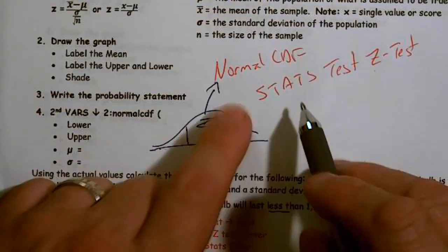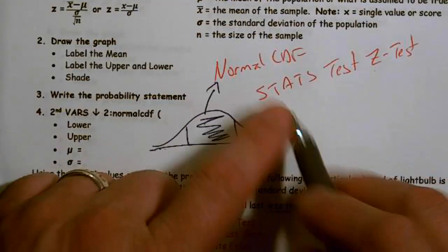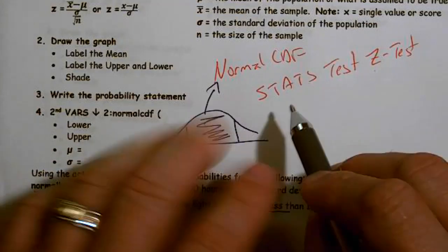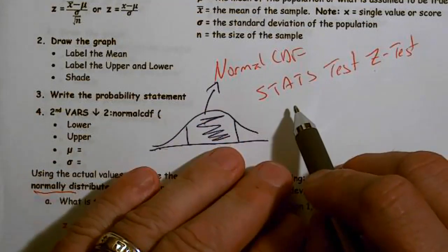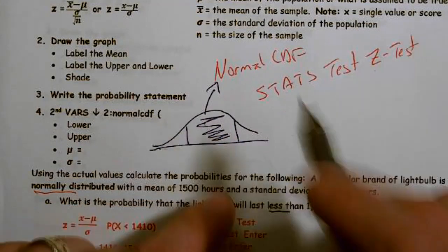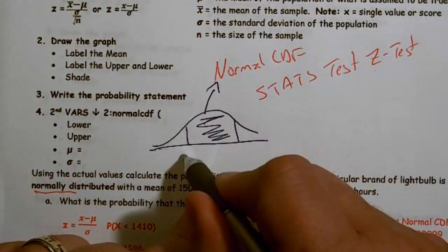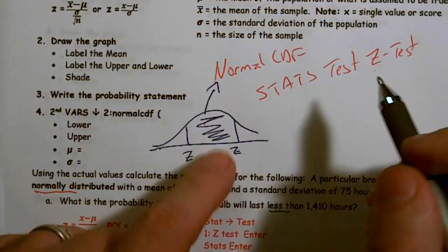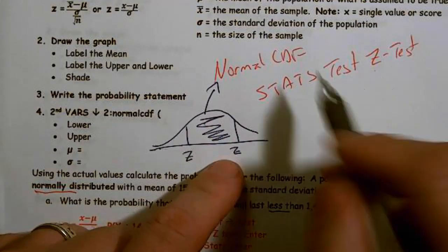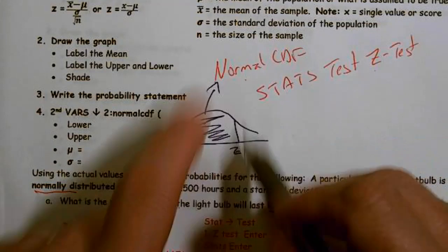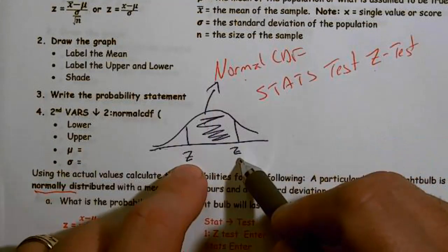However, when you do these problems, regardless of whether it's shading one direction or two directions, you have to give the actual Z scores. It's not enough just to give the actual values — you're going to have to give the Z score. Unfortunately, the normal CDF doesn't provide that, so you'll have to calculate it by hand.